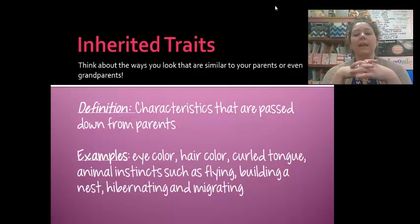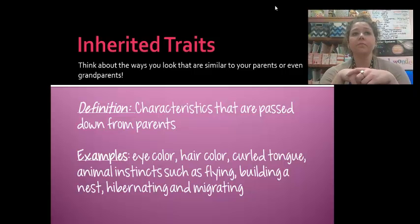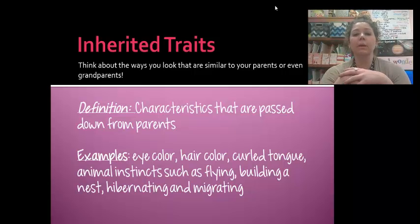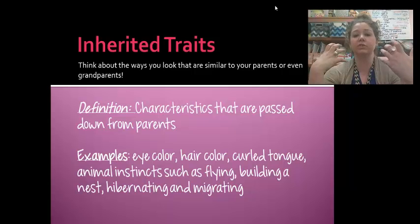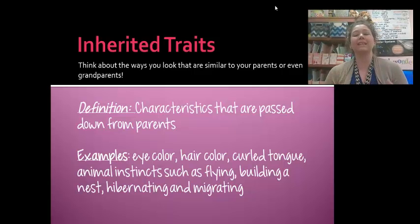Another thing that's inherited are animal instincts. Like a bird — it just automatically knows when to fly. It just knows when it's time to start flying. They know to build a nest, they know to hibernate, they know to migrate. When babies are born and they start crying, that's an instinct — they didn't have to learn how to do that, they just cry. Anything you're automatically born knowing how to do is an inherited trait.